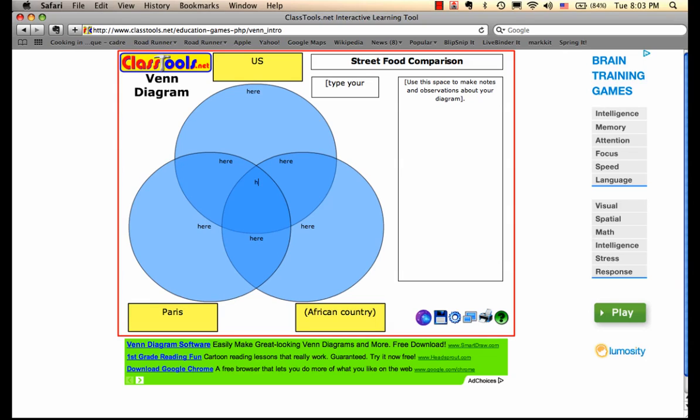If it's common to all three—the U.S., Paris, and your African country—then you put it in the center space. You should have at least three facts in each category. Once you've finished, if you have any notes to make, they would go there.